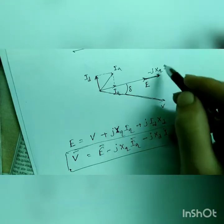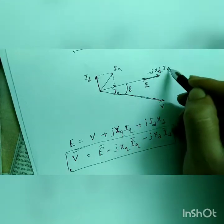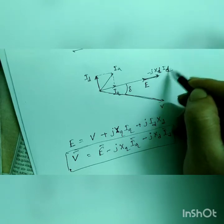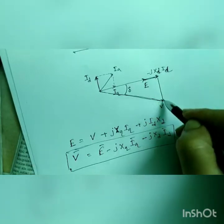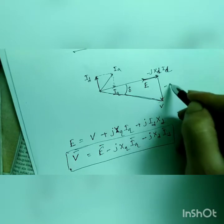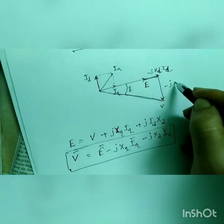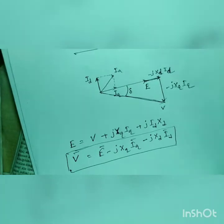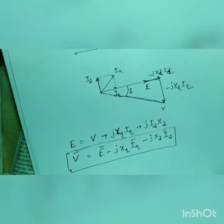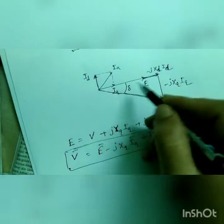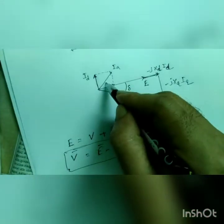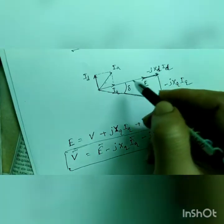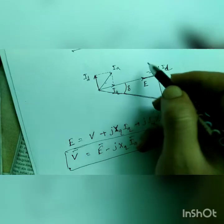So this is minus J of xd id and that will be minus J of xq iq. Is it fine? So from here we can say that the angle between IA load current and the emf induced emf is phi.